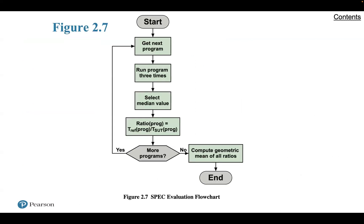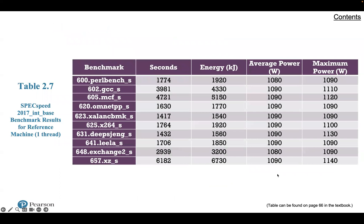Here is an illustration of the SPEC evaluation flowchart, showing how the process flows and the looping process that is allowed. The SPEC CPU 2017 also introduces an additional experimental metric that enables measurement of power consumption while running the benchmark, giving users insight into the relationship between performance and power.